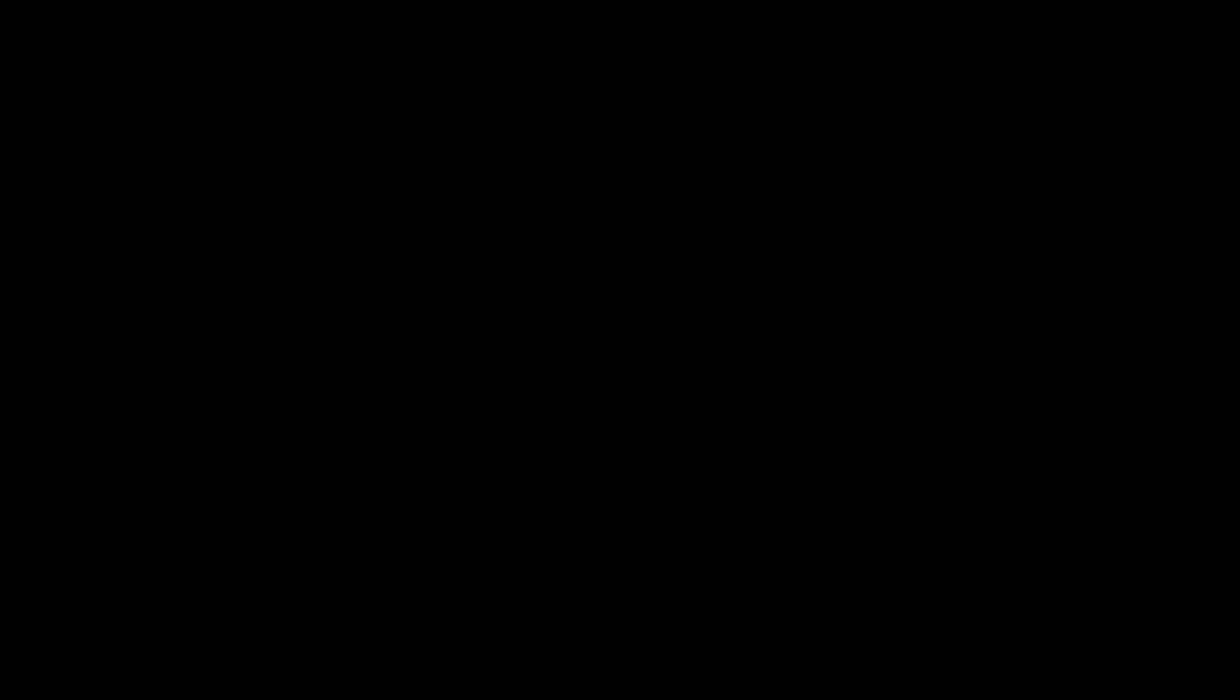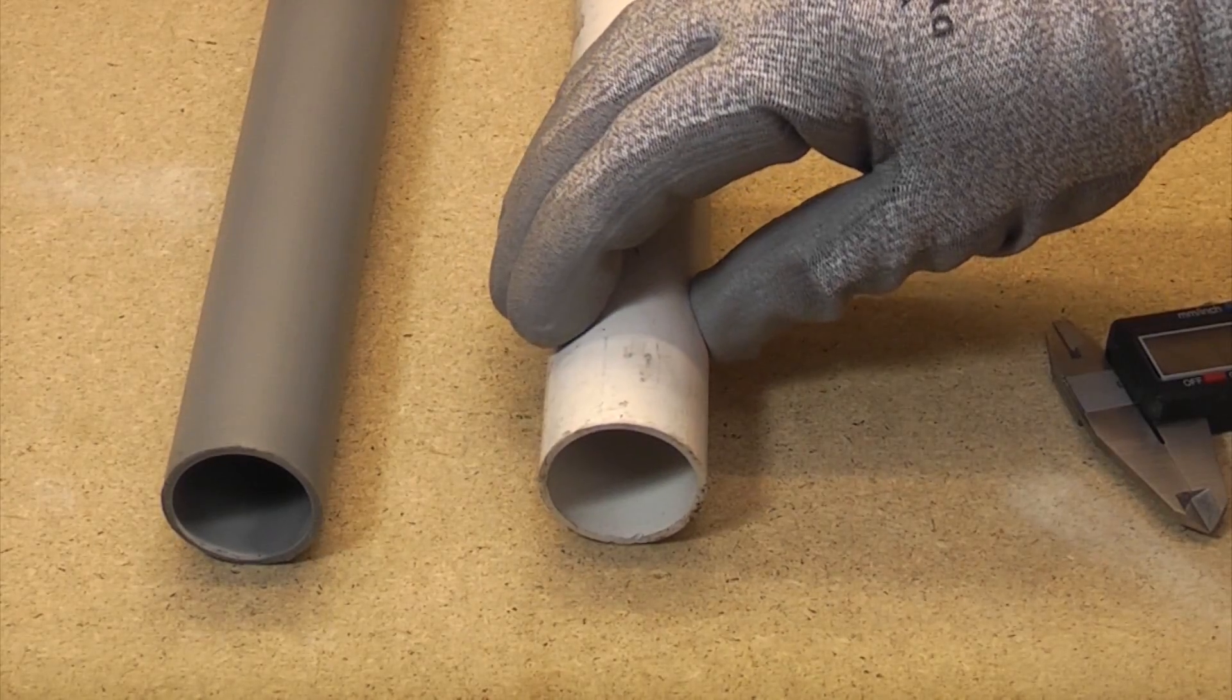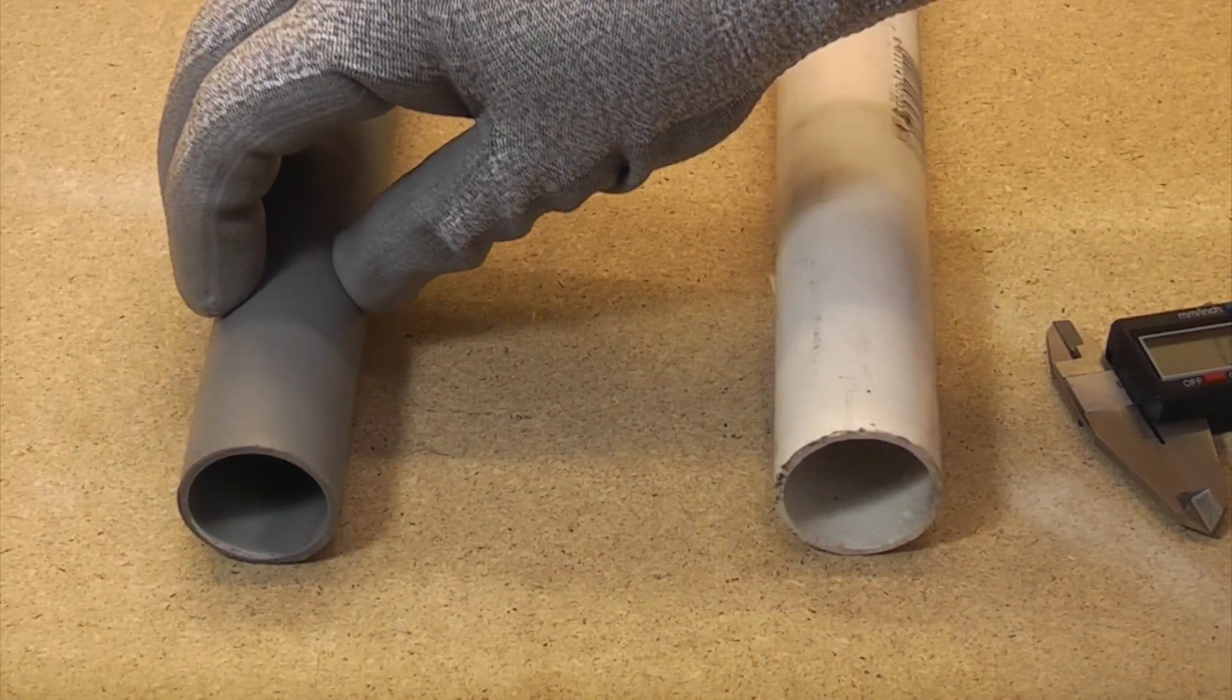Problems arise when you want to connect one of those to one of those, because they are different sizes. So here we've got two pieces of 32mm waste pipe. The white one is solvent weld and the grey one is push fit.